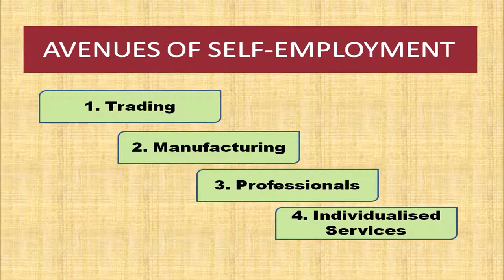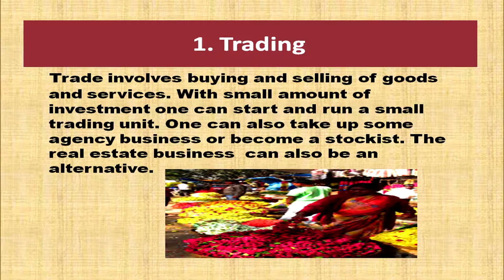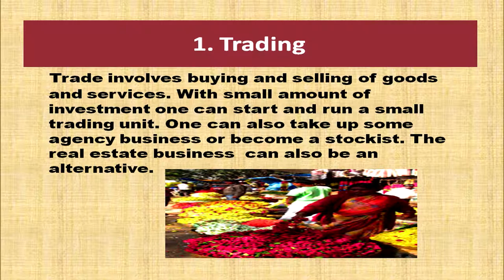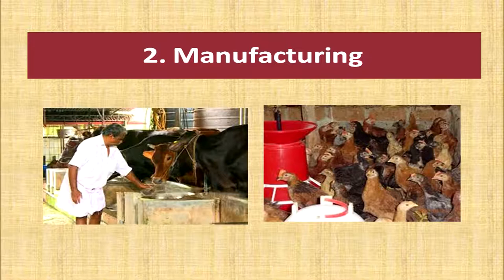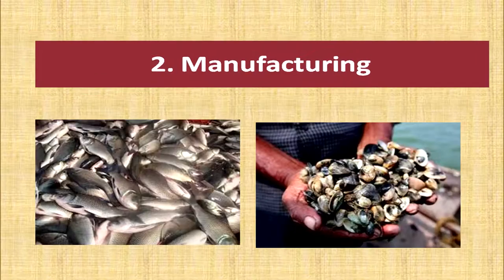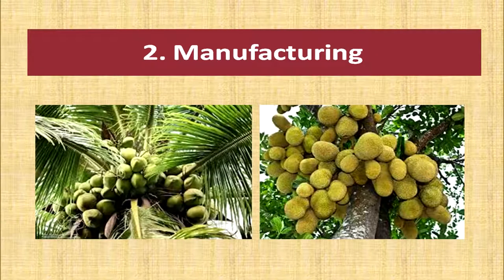Coming to the avenues of self-employment — the major avenues are trading, manufacturing, professionals, and individualized services. Trading involves buying and selling of goods and services. With a small amount of investment, one can start and run a trading unit, take up agency business, or become a stockist. Real estate business can also be an alternative. Manufacturing — like manufacturing bricks, bakery items, or confectionery — requires small capital and simple equipment. Orchards, dairy, poultry, sericulture, and horticulture are also major avenues.